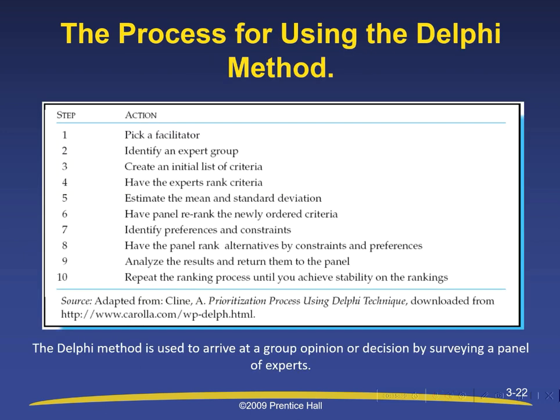The process for using the Delphi method: it is used to arrive at a group opinion or decision by surveying a panel of experts. The diagram shows steps and corresponding actions, numbered one to ten. Step one is to pick a facilitator; step two is to identify an expert group; step three is to create an initial list of criteria. The process continues through to the final step, where the ranking process is repeated until stability is achieved.